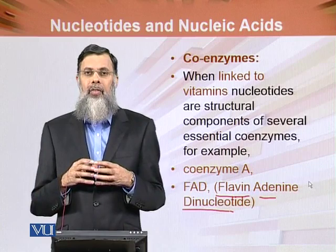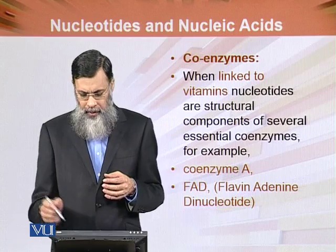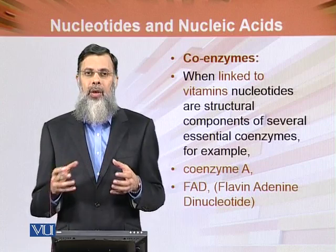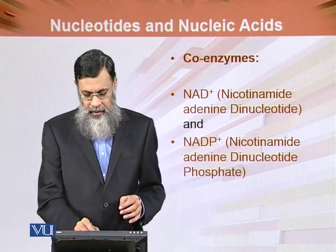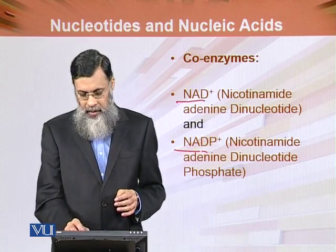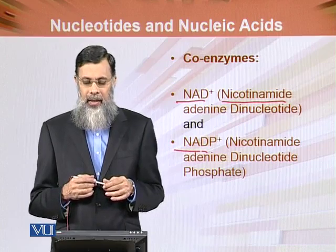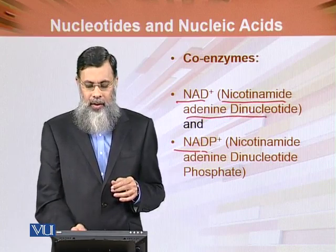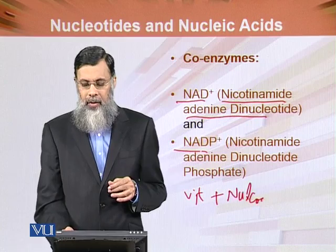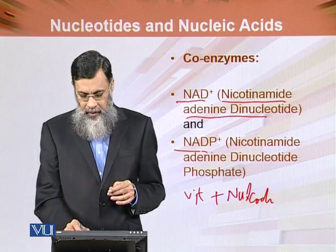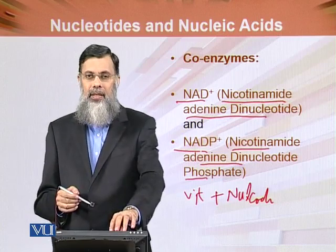So, Flavin Adenine Dinucleotide is ultimately a coenzyme combining a vitamin and a nucleotide. We will discuss coenzymes and their functions in detail during enzymology. Other coenzymes include NAD and NADP. NAD is formed from nicotinamide, which comes from the vitamin niacin, combined with adenine dinucleotide as the nucleotide part. Vitamins plus nucleotides form coenzymes. Similarly, nicotinamide adenine dinucleotide phosphate (NADP) also acts as a coenzyme.